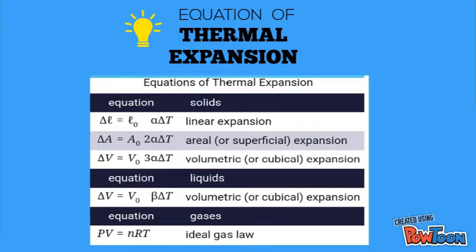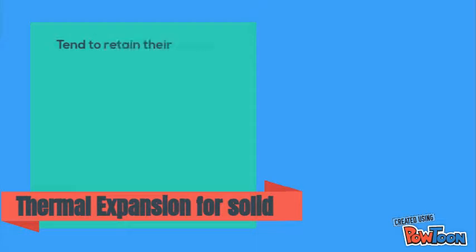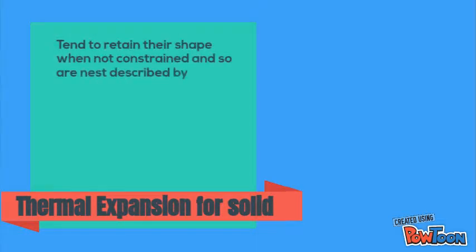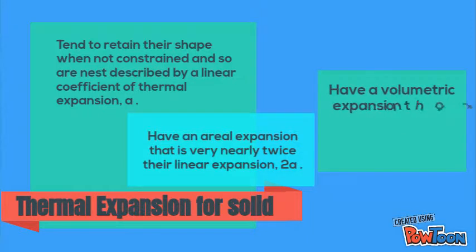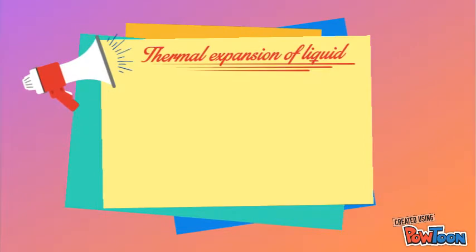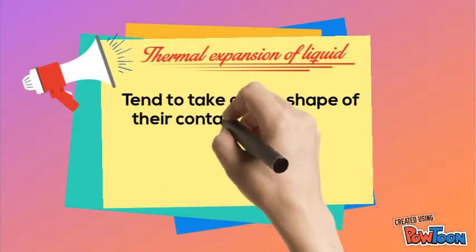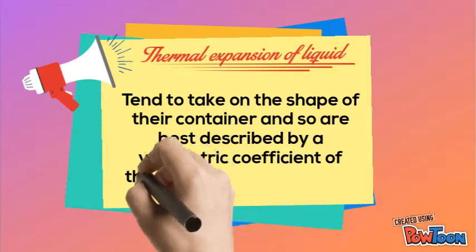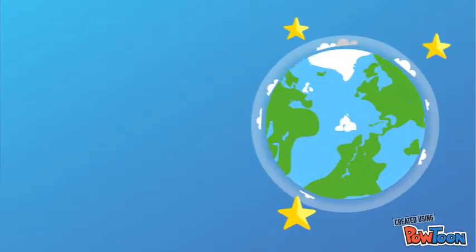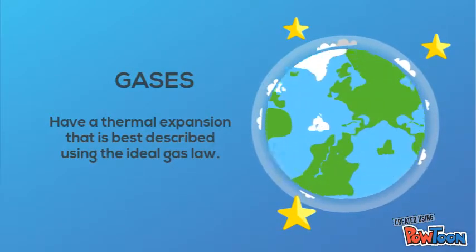These are the equations of thermal expansion — you can look at the table. Thermal expansion for solids: first, solids tend to retain their shape when not constrained and are described by a linear coefficient of thermal expansion; second, they have an area expansion that is very nearly twice their linear expansion; and third, a volumetric expansion that is very nearly three times their linear expansion. Thermal expansion of liquids: liquids tend to take on the shape of their container and are best described by a volumetric coefficient of thermal expansion beta. Gases have a thermal expansion best described using the ideal gas law.